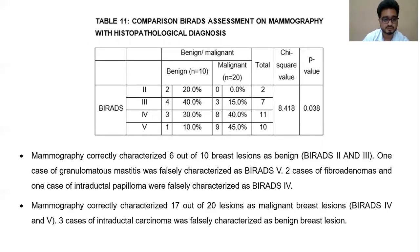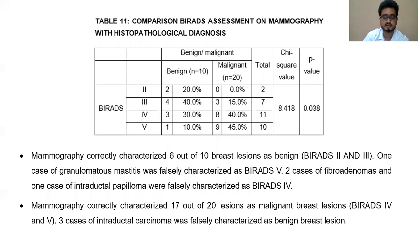Mammography correctly characterized 6 out of 10 benign breast lesions as BIRADS 2 and 3. However, 1 case of granulomatous mastitis, 2 fibroadenomas, and 1 intraductal papilloma were falsely characterized as malignant by mammography. Mammography correctly characterized 17 out of 20 lesions as malignant, which is BIRADS 4 or 5. However, 3 cases of intraductal carcinoma were falsely characterized as benign.